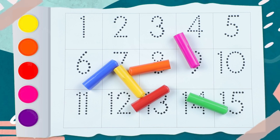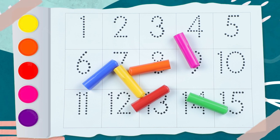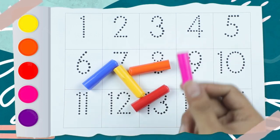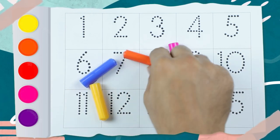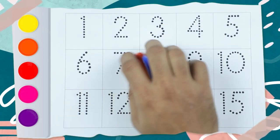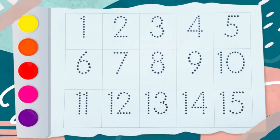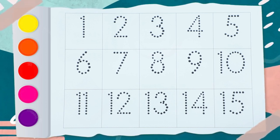Hello friends! Today we learn numbers 1 to 15 with colors — green color, pink color, red color, yellow color, orange color, blue color. So let's start the learning! 1, 2, 3, 4, 5, 6, 7, 8, 9...